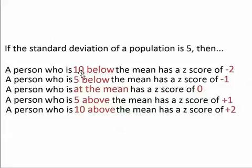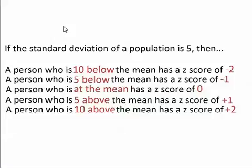A student in the class who is 10 below the mean would be two standard deviations of 5 below the mean, so that student would have a z-score of minus 2. If you start at the mean and you go down by 5 and you go down by 5 again, you've gone two standard deviations below the mean and you've reached a student who is 10 below the mean. That student has a z-score of minus 2.